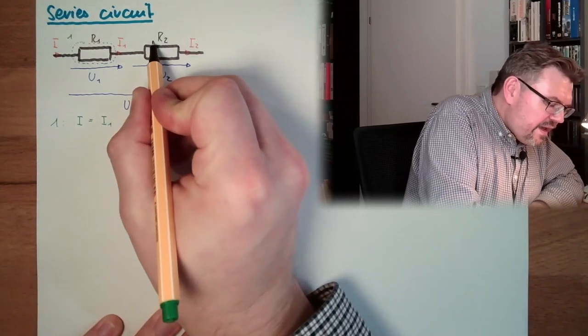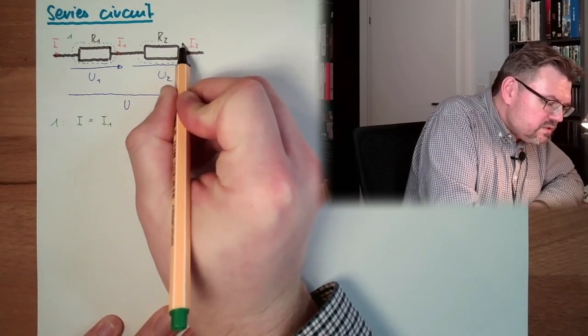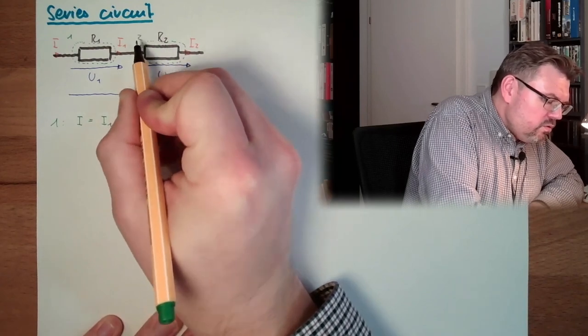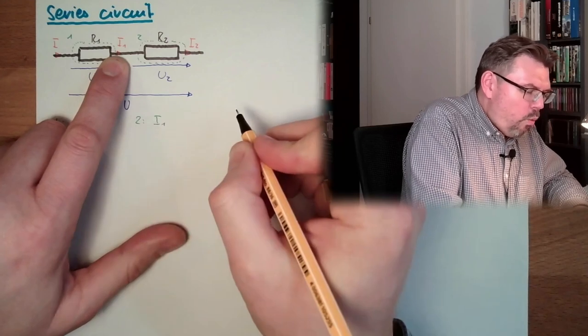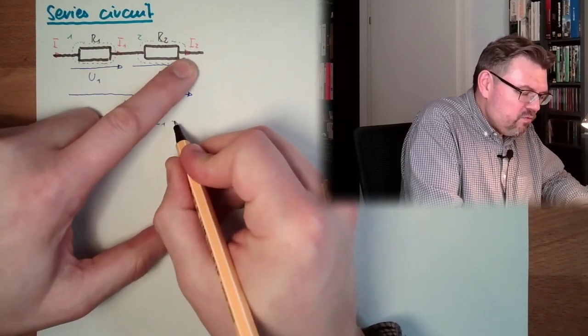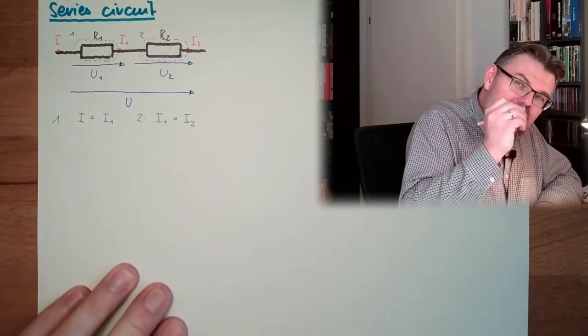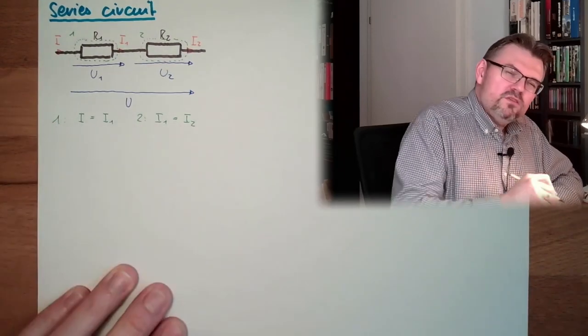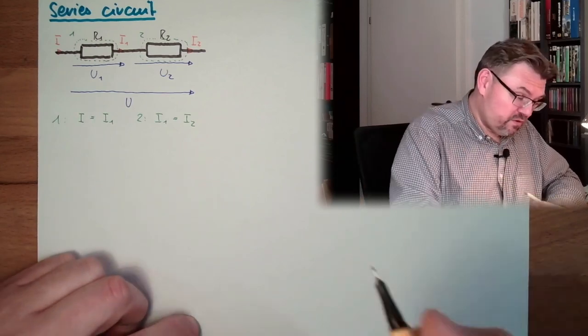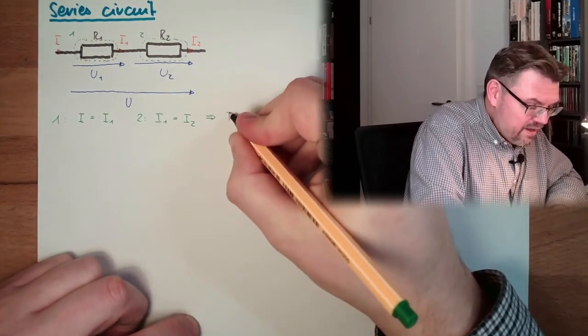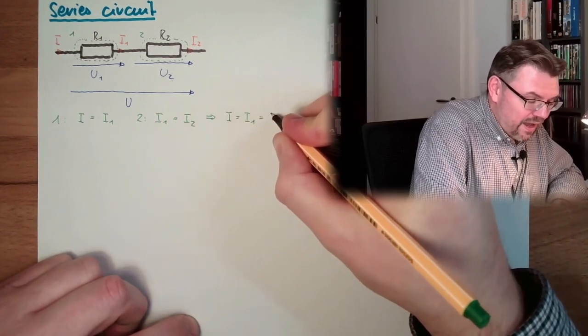Now let's see at node number 2, junction number 2. What is going in is I1. What is going out is I2. So those two are also equal. So what is directly following out of those two conditions? Following out of Kirchhoff's first law means I equals I1 equals I2.